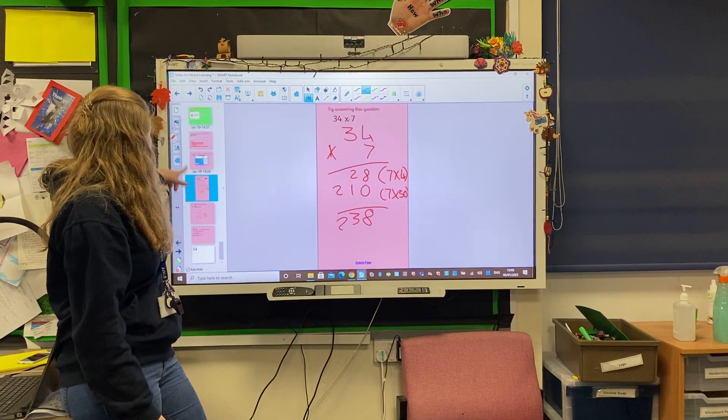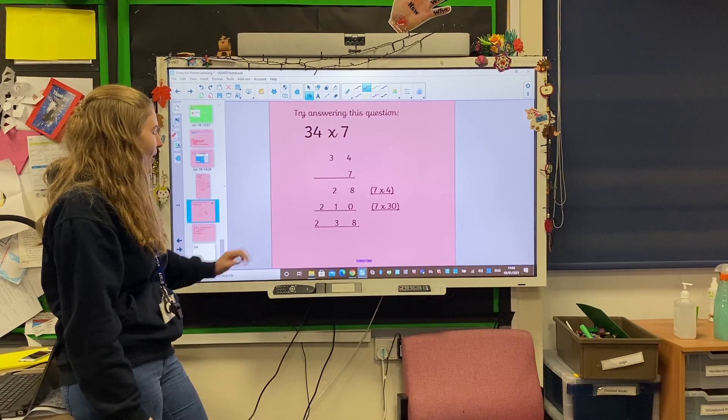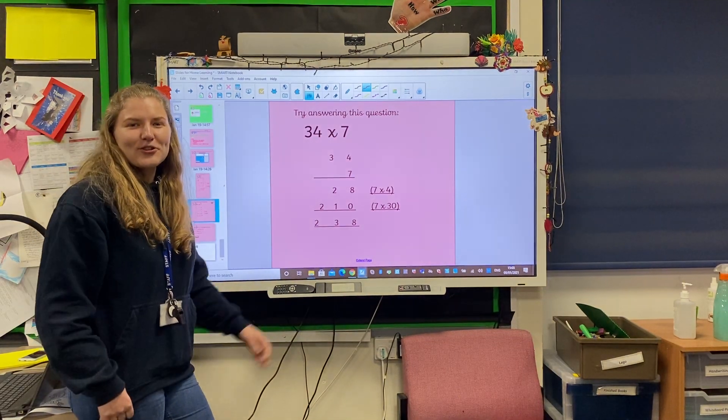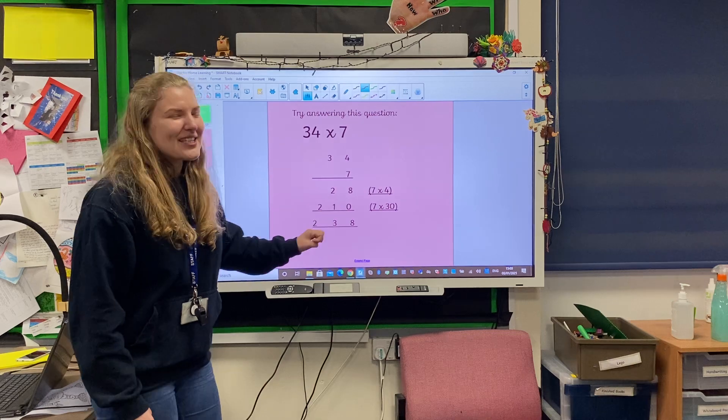So next, let's just check we're right, we are. See how nicely presented this is children, this is what it's going to look like in your book. It's very tricky to write on these smart boards.